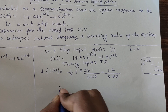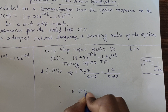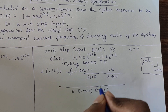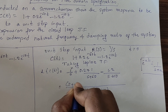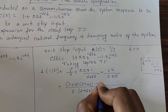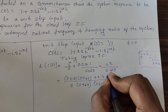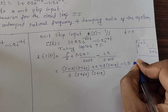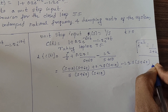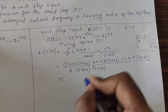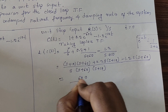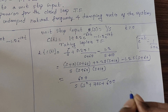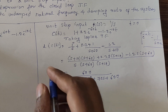Now simplify C(s) by taking the LCM as s(s+60)(s+10). Expanding the numerator terms and simplifying, we get C(s) = 600 / [s(s² + 70s + 600)].